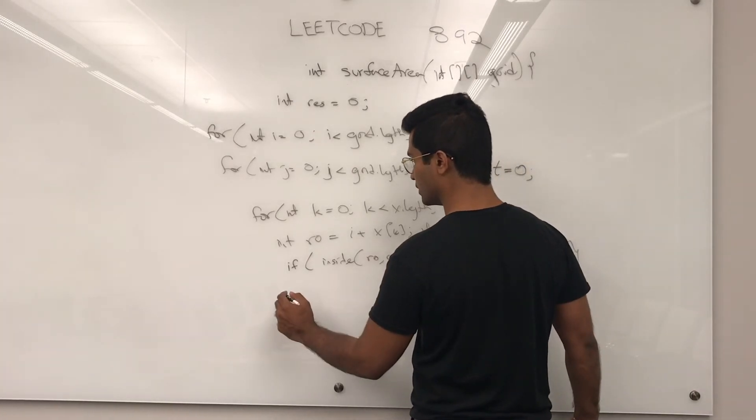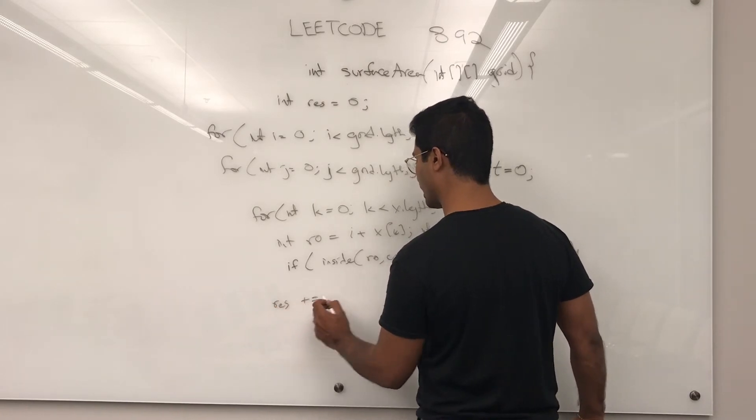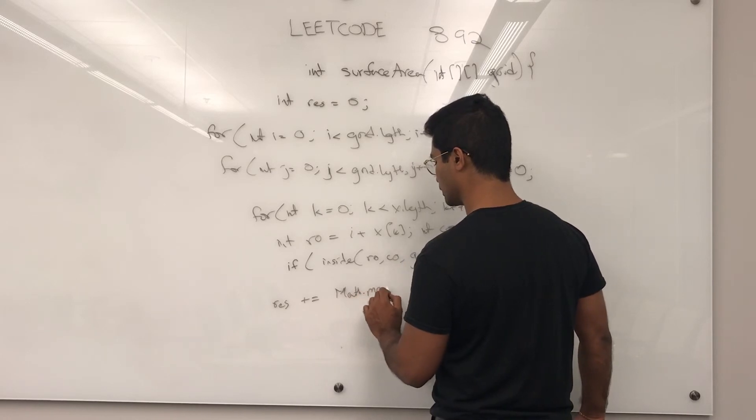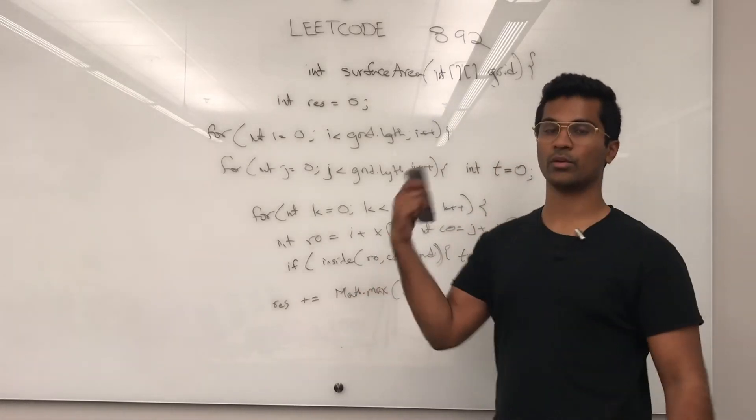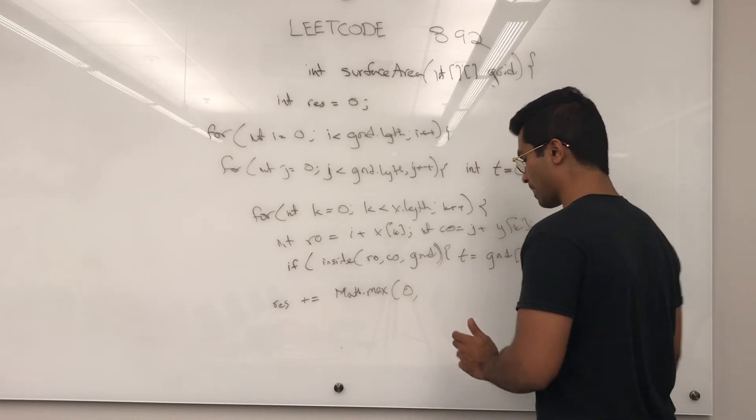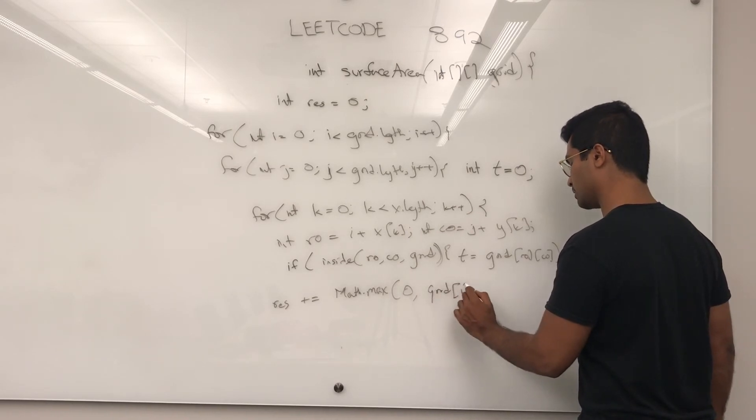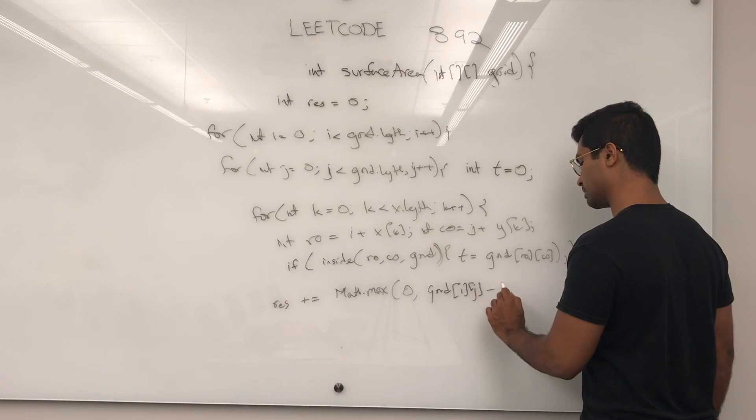Then, all we have to do is increment res by either 0, in the case that whoever I'm comparing to is larger than me, or my height, which is grid[i][j] minus t.